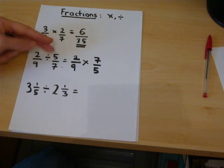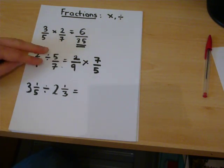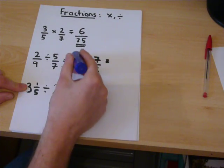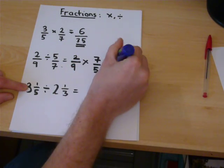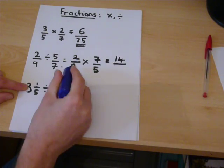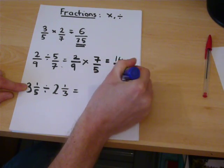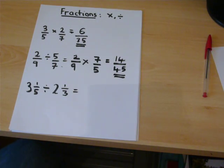Now, they are both called the inverse. The inverse of divide is times. The inverse of 5 sevenths is 7 fifths. And they are the same question. We then do 2 times 7 is 14, and 9 times 5 is 45. And that is the answer.